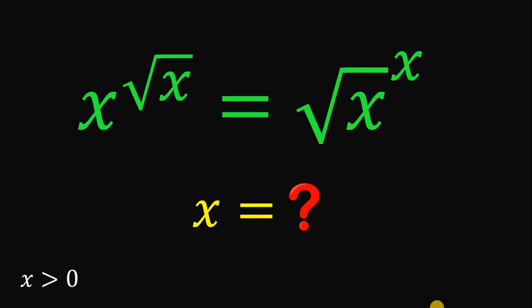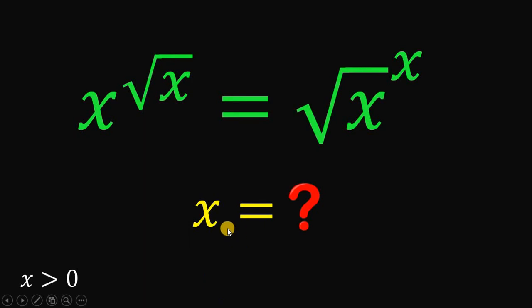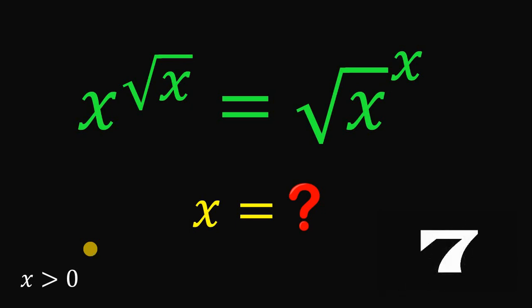Can you solve this math challenge? Here's the question: solve for the value of x, given that x raised to the square root of x equals square root of x raised to the power of x, wherein x is definitely greater than 0. You can pause this video if you want to give this problem a try.